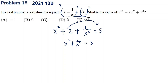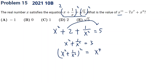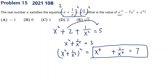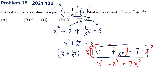We need to square again to get closer to the power of 11. Squaring x squared plus 1 over x squared gives x to the fourth plus 2 plus 1 over x to the fourth equals 9. Moving the 2 over gives x to the fourth plus 1 over x to the fourth equals 7. Then multiplying both sides by x to the seventh gives x to the 11th plus x cubed equals 7 times x to the seventh.